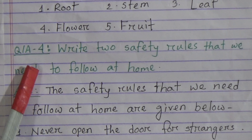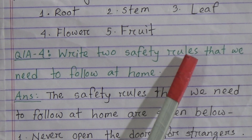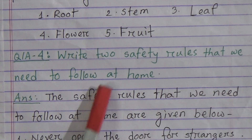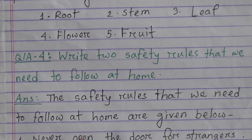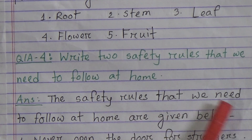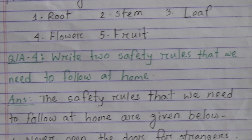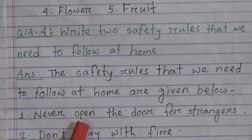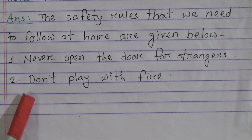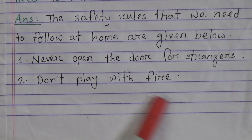Now, question answer number 4: Write 2 safety rules that we need to follow at home. The safety rules that we need to follow at home are: number 1, never open the door for strangers; and number 2, don't play with fire.